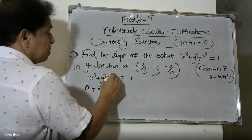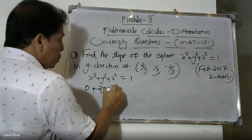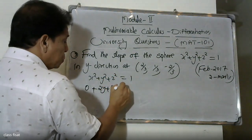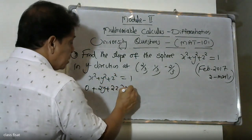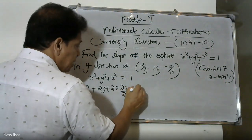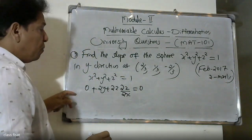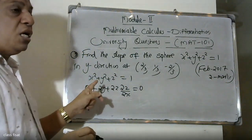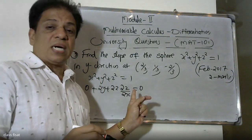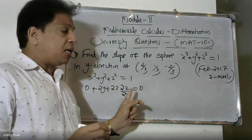We write z as a function, so x and y are independent variables and z is the dependent variable. We partially differentiate with respect to y.